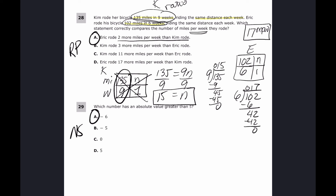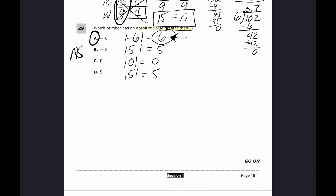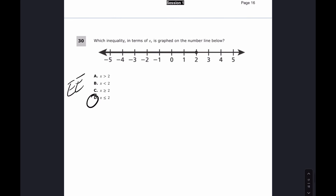For number twenty-nine, which number has an absolute value greater than five? The absolute value of 6 is 6, of negative 5 is 5, of zero is 0, and of 5 is 5. The only one with absolute value greater than five is negative 6. The answer is A.